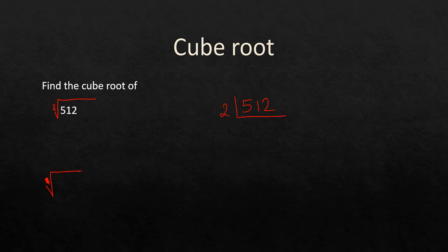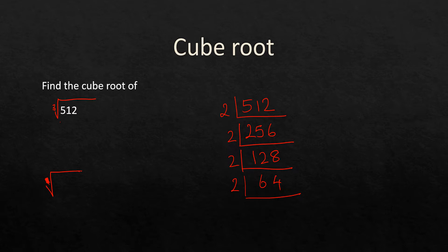512 is divisible by 2 repeatedly. Dividing by 2 all the way down, we get nine 2s: 512 = 2 × 2 × 2 × 2 × 2 × 2 × 2 × 2 × 2. There are nine 2s in total.